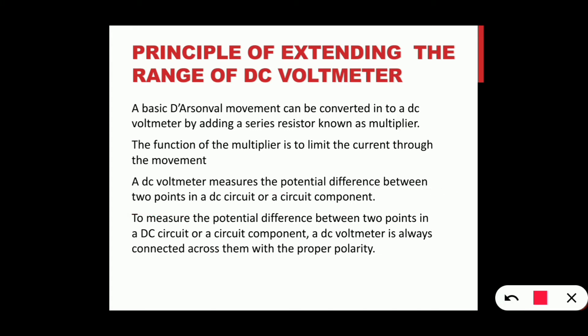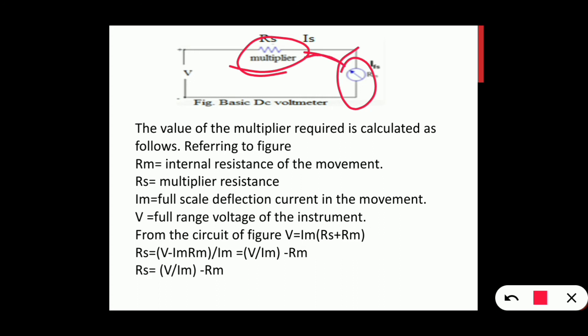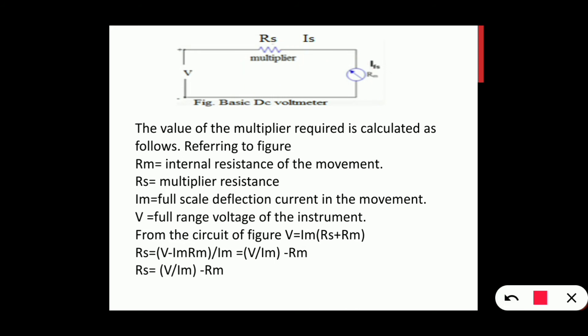The DC voltmeter measures the potential difference between two points in a DC circuit or circuit component. A DC voltmeter is always connected across the component with proper polarity. There is a series resistance between the two points. The formula is R equals (V minus Im × Rm) divided by Im.